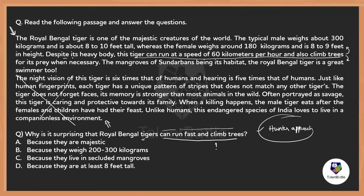We find the relevant sentence: 'Despite its heavy body, the tiger can run at a speed of 60 kilometers per hour and also climb trees.' The phrase 'despite its heavy body' is the key. The Royal Bengal tiger typically weighs 300 kilograms, so despite that heavy weight it can run at 60 km/h and climb trees — that is what makes it surprising.